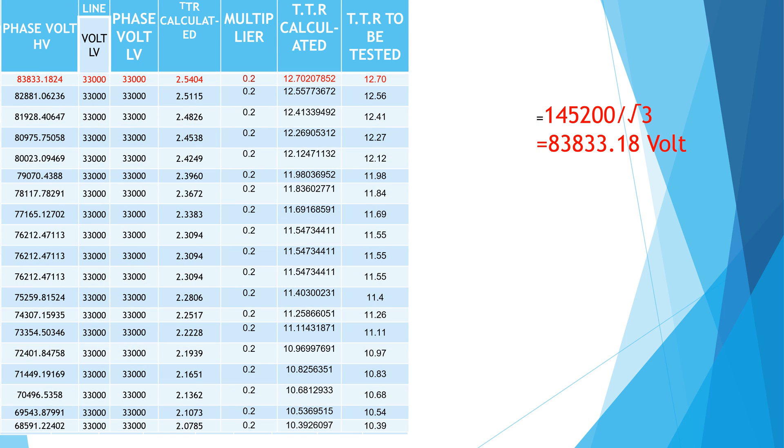In delta side voltage is 33 kV. Here phase voltage is equal to line voltage. So ratio of voltage is equal to 2.5404 at tap number 1.